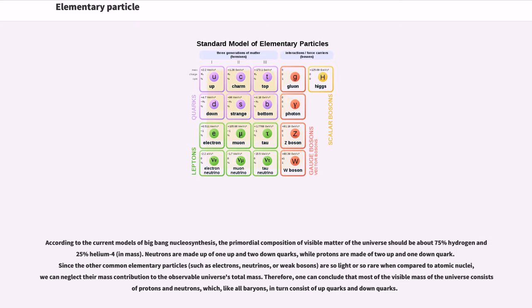According to the standard model, the primordial composition of visible matter should be about 75% hydrogen and 25% helium-4 in mass. Neutrons are made up of 1 up and 2 down quarks, while protons are made of 2 up and 1 down quark. Since the other common elementary particles, such as electrons, neutrinos, or weak bosons, are so light or so rare when compared to atomic nuclei,